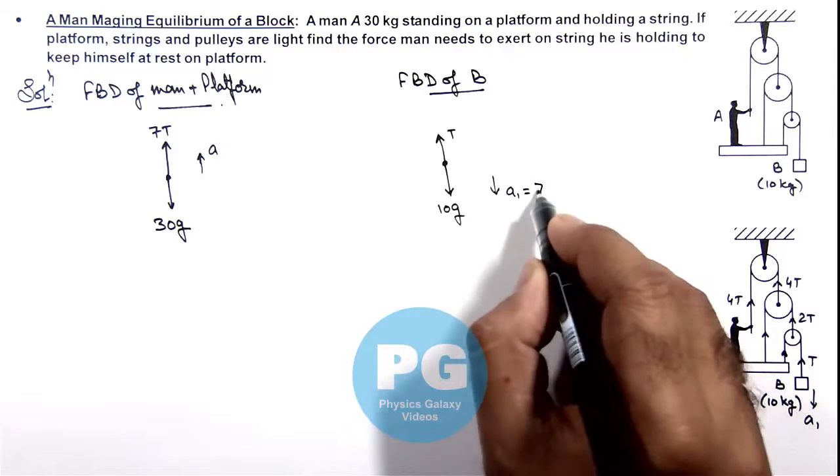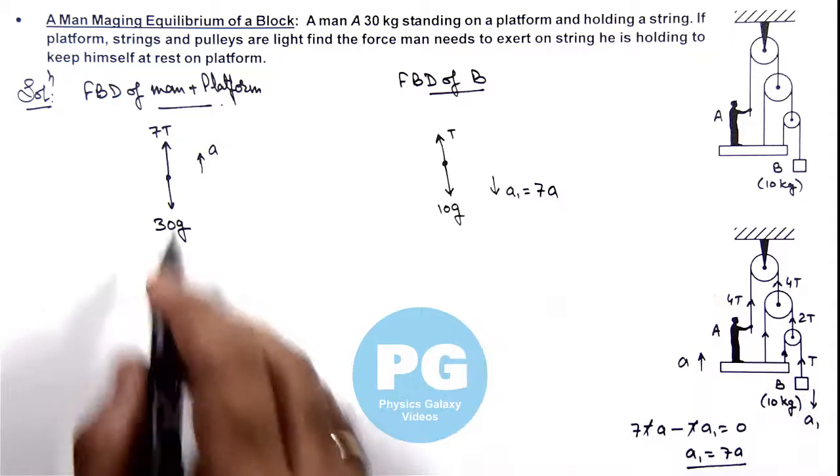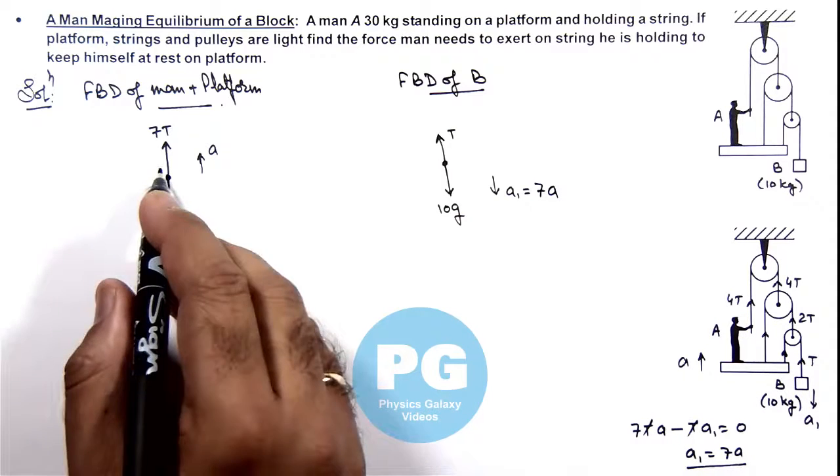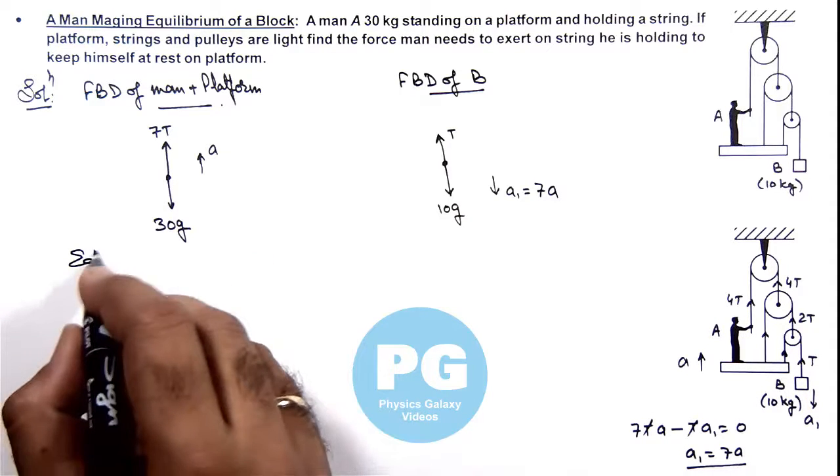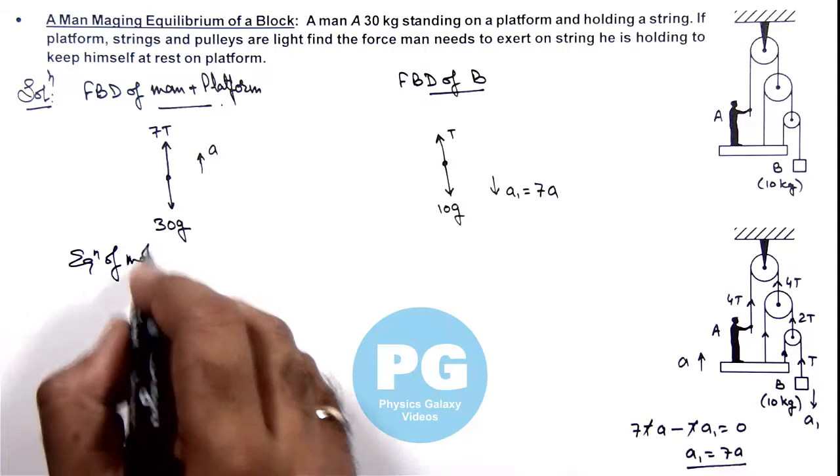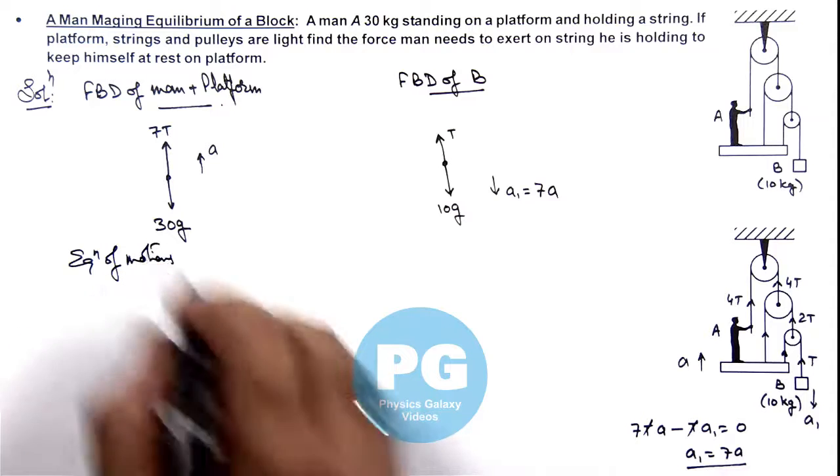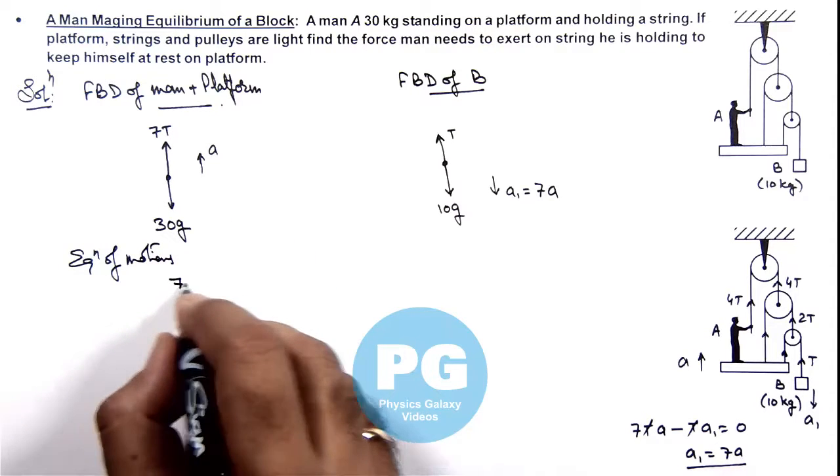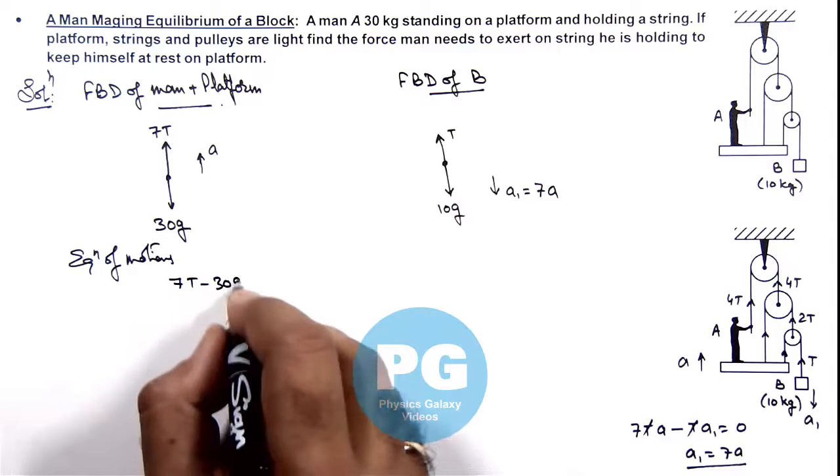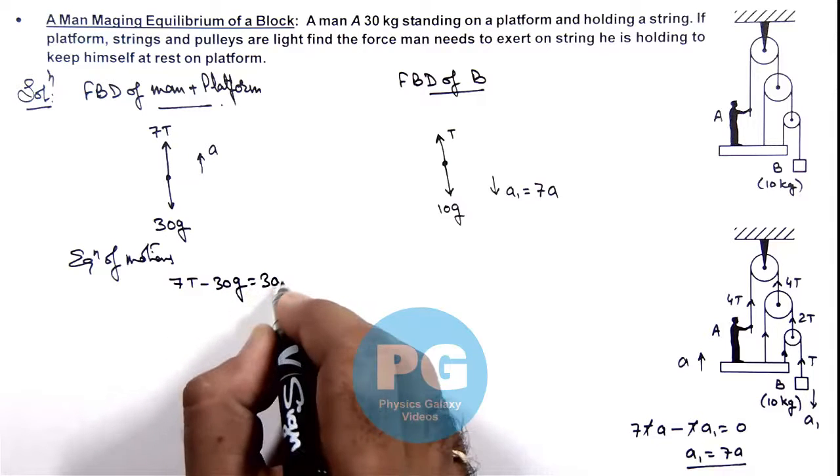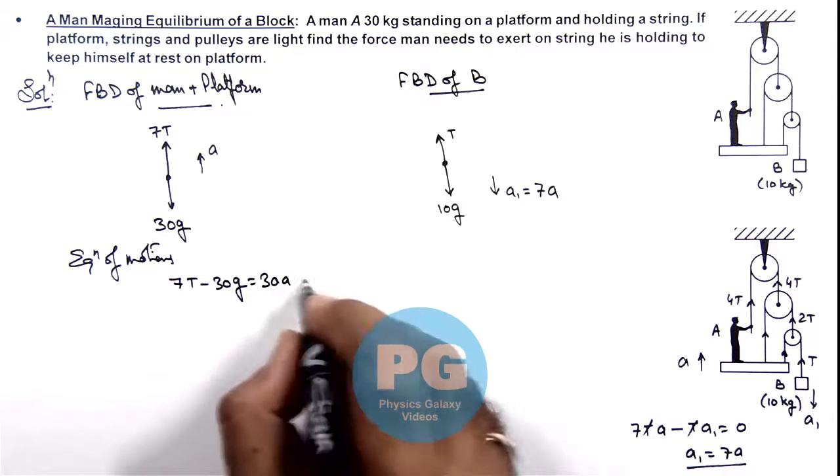So here ay1 will be 7ay. If we write the equation of motion, then equation of motion for these systems we can write: this will be 7T minus 30g is equal to 30ay. This is our first equation.